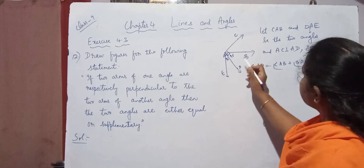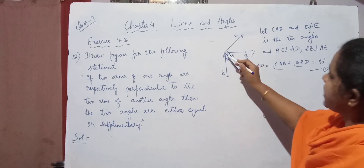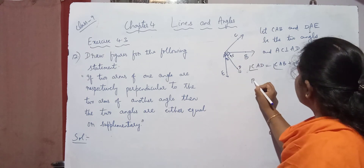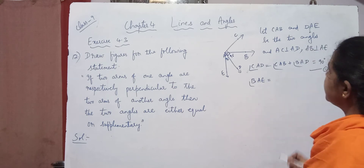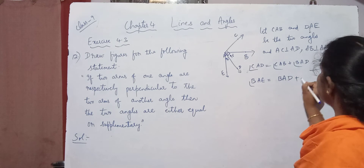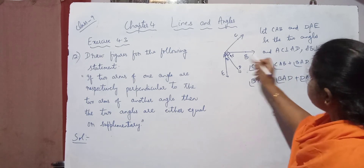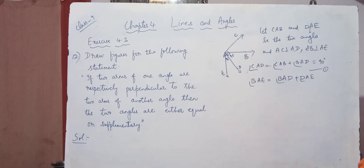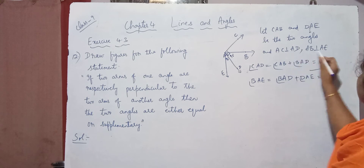And also if you take angle BAE — BAE or EAB both mean the same, here the angle in the middle, that is A, is important. So angle BAE equals BAD plus DAE. And these two arms are also equal to 90 degrees according to the given condition.